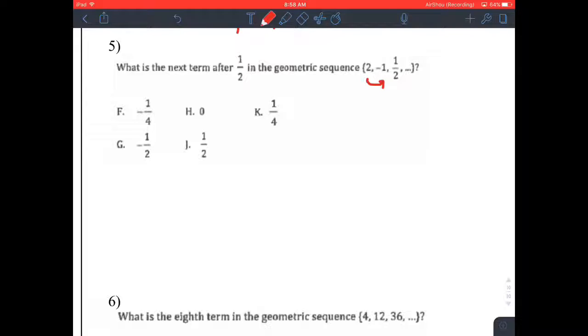Well, you'd multiply it by negative 1 half. To get from negative 1 to 1 half, you'd also multiply by negative 1 half. So to figure out the next term in the sequence, we're going to multiply the 1 half by negative 1 half. That's going to give us negative 1 fourth.